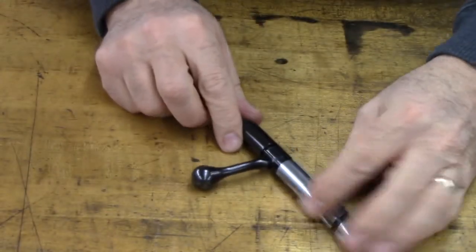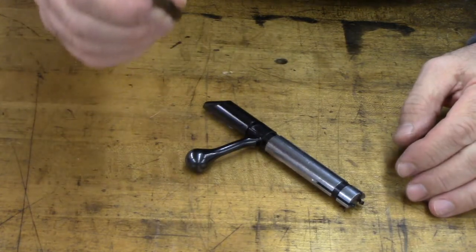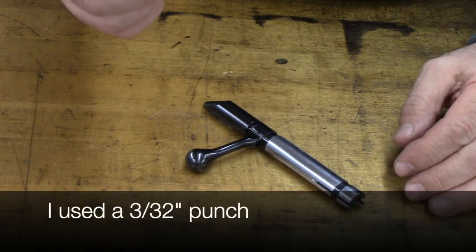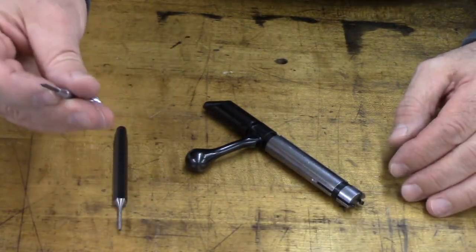The only tools we're going to need for disassembly is a small 1/16th inch or 1/8th inch diameter punch and a small little screwdriver.